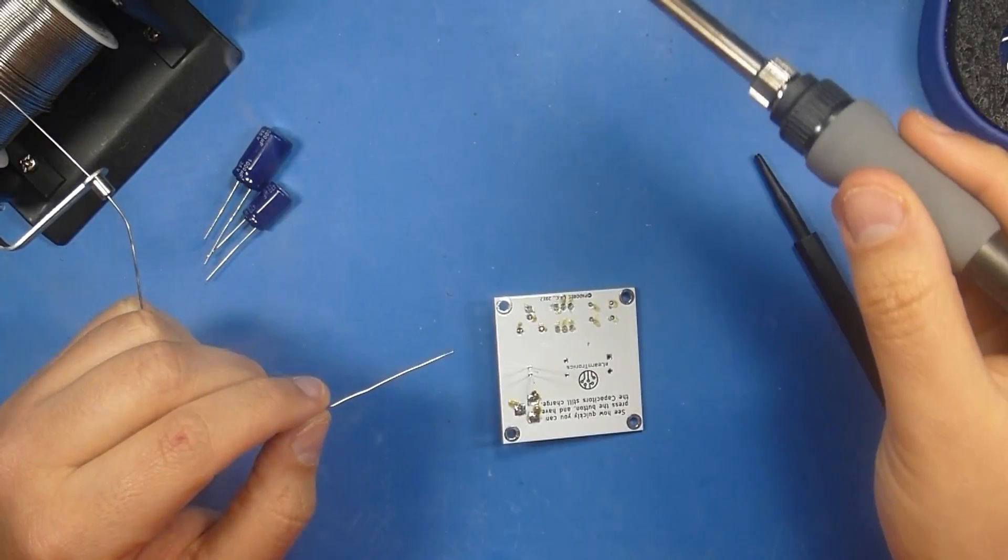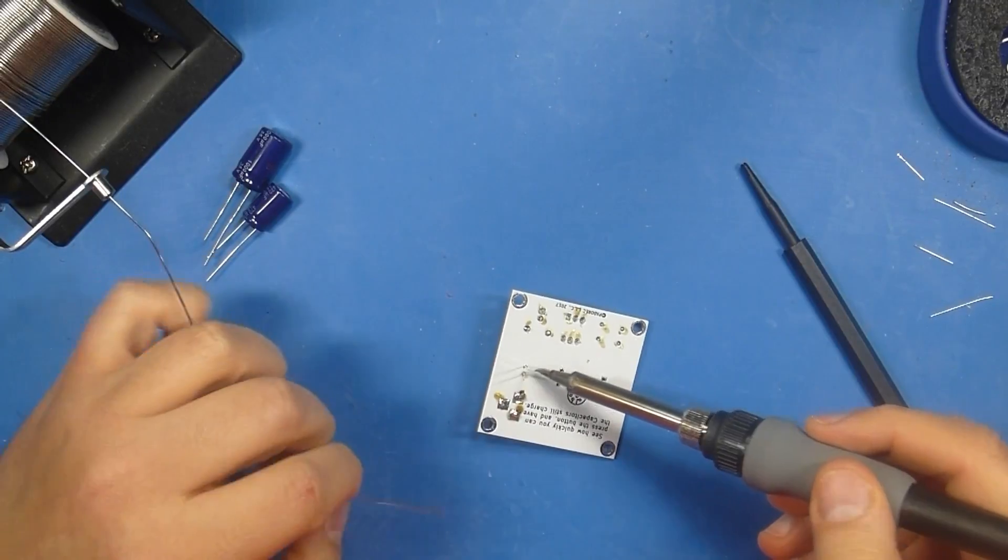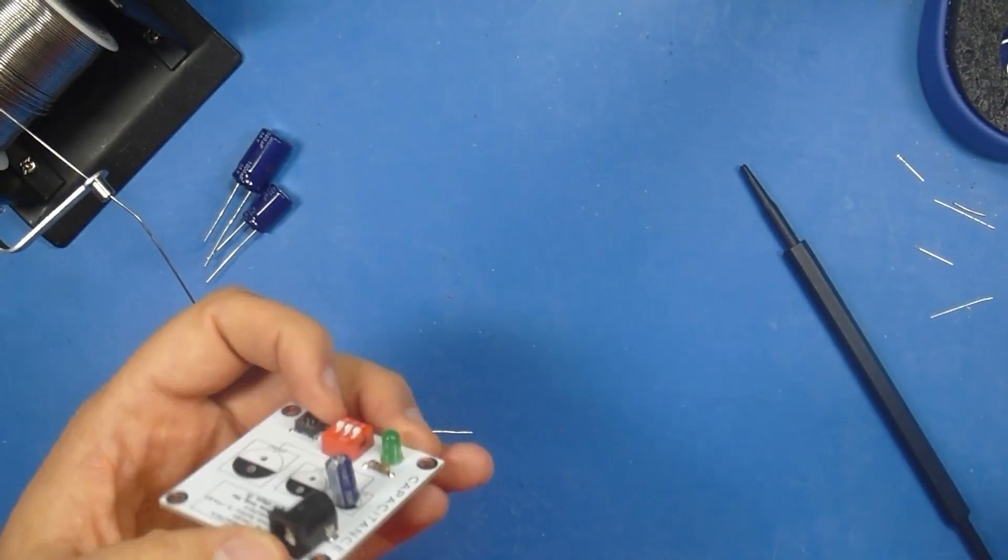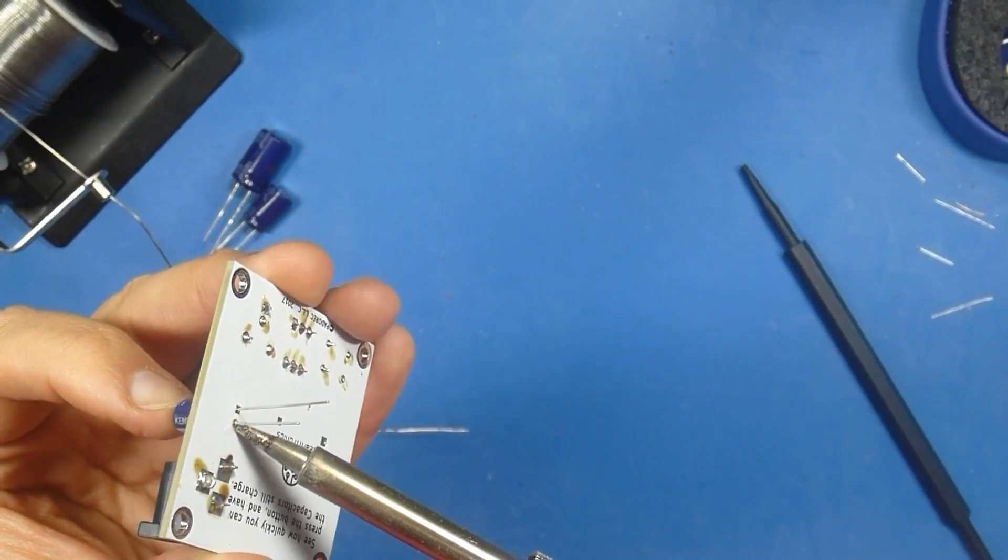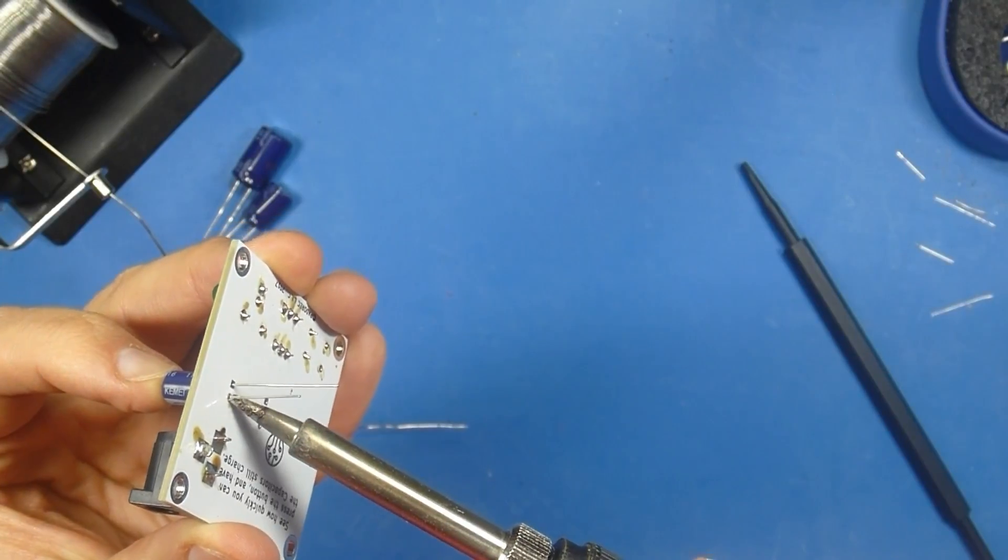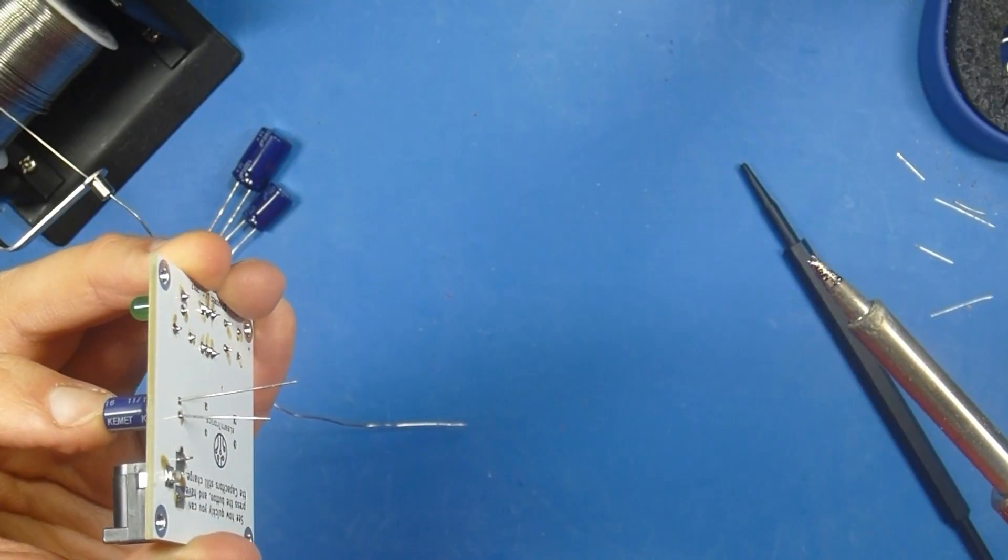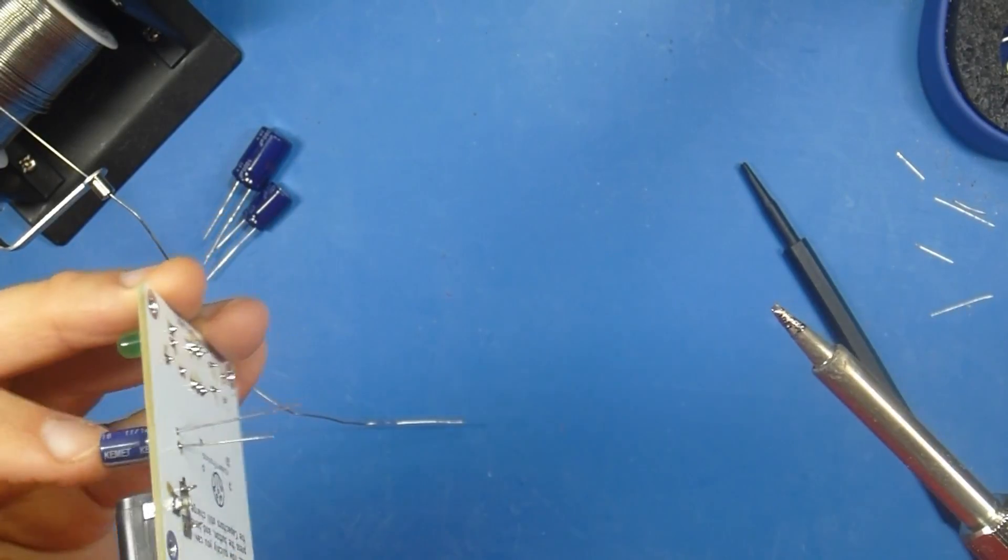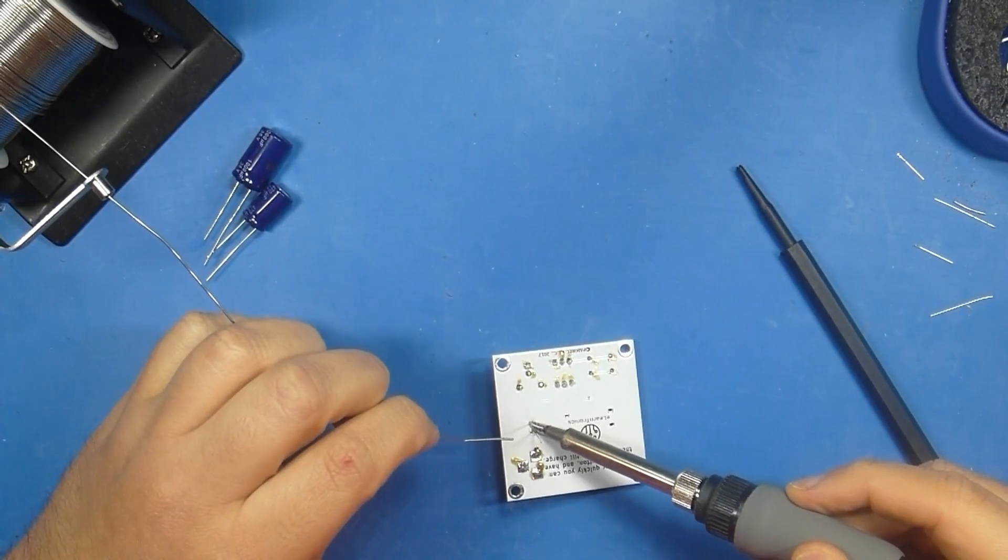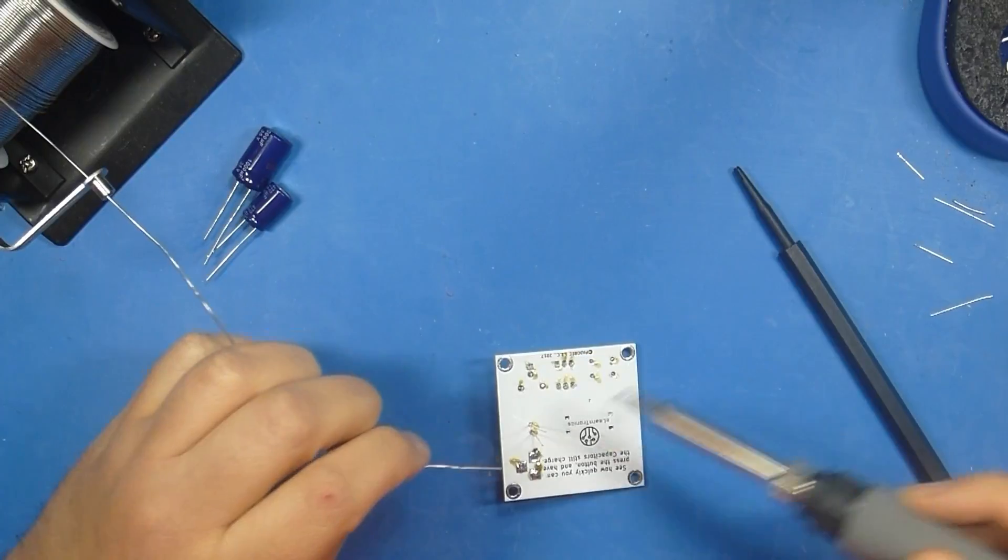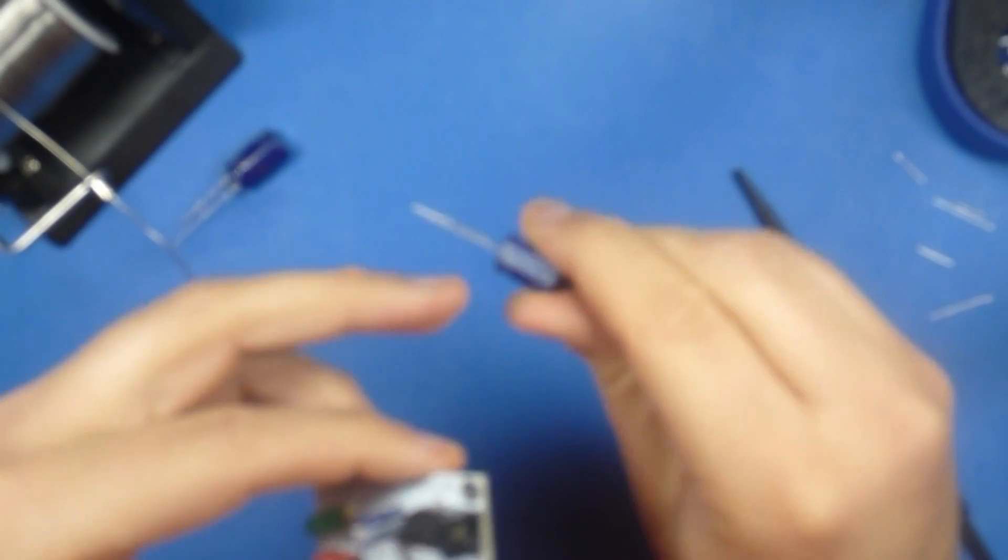So we'll go ahead and I'm going to clean up my tip and tin it and we'll just tack down one point and one point only. These capacitors are not going to sit super flush. So we're going to tack down that one point, put our finger on the other end, reflow that solder and just push it flush until we're happy. Now I will caution you, you don't want to put too much heat into these capacitors. Technically you can cause damage to them if they overheat. If you're quick about it you're not going to have an issue but just something to be aware of don't just sit there with your soldering iron on the capacitor.